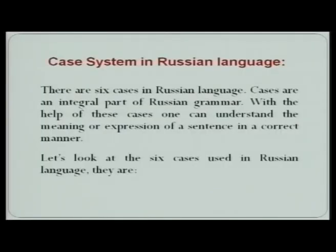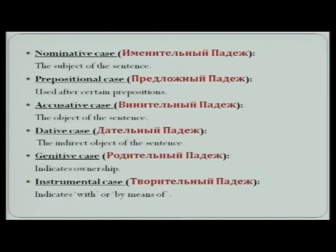Let me tell you a little about the case system in Russian language along with their definitions. As you already know, there are six cases, and these cases are an integral part of Russian grammar. With the help of these cases, one can understand the meaning of an expression or sentence correctly. These six cases are: nominative case, prepositional case, accusative case, dative case, genitive case, and instrumental case. Let's understand the exact meaning of these cases and how they are called in Russian.